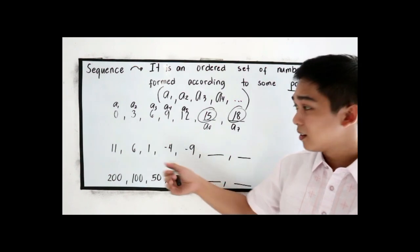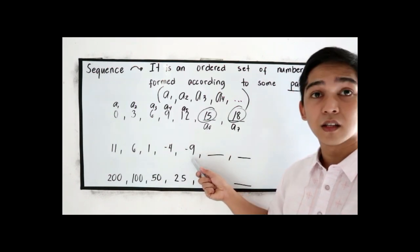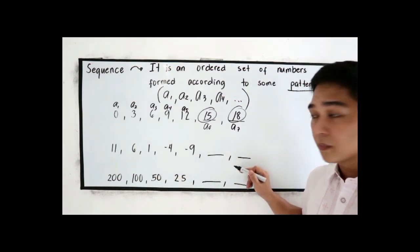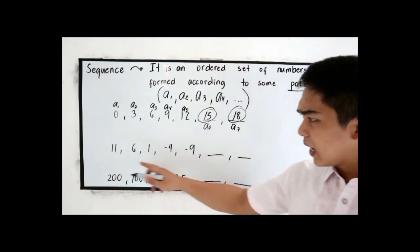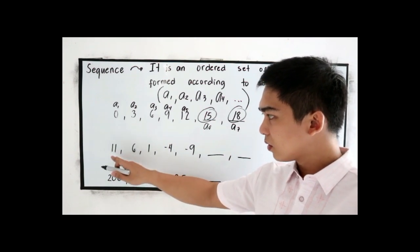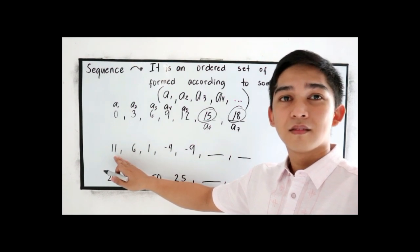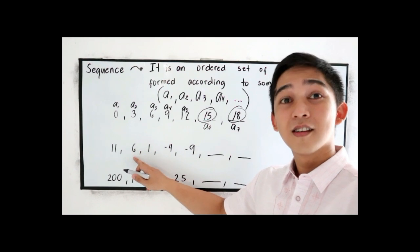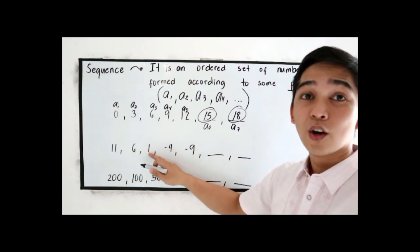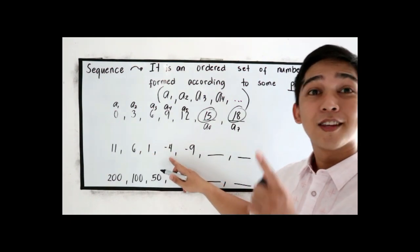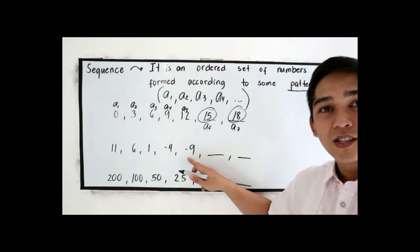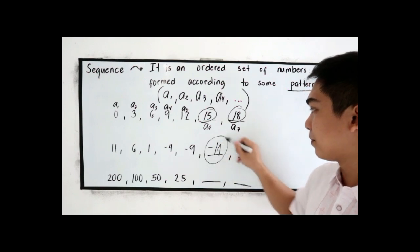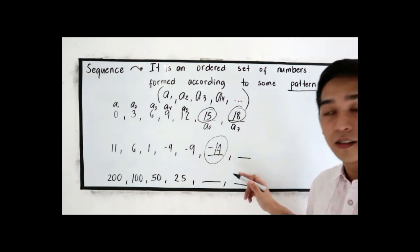Another example: 11, 6, 1, negative 4, negative 9. What will be our next two terms? We subtract 5 to get the succeeding term. So 11 minus 5 is 6, 6 minus 5 is 1, 1 minus 5 is negative 4, negative 4 minus 5 is negative 9. So the next term is negative 9 minus 5, which is negative 14. Next to negative 14 is negative 19.